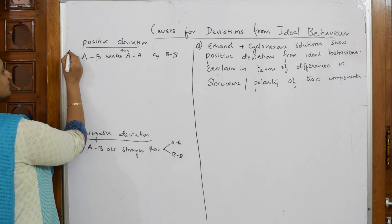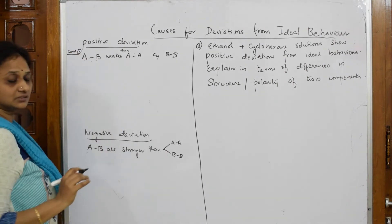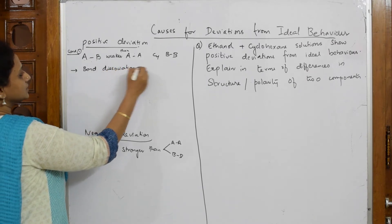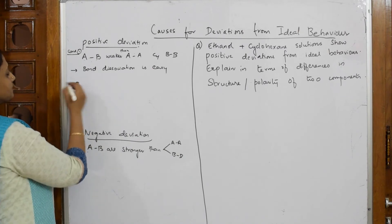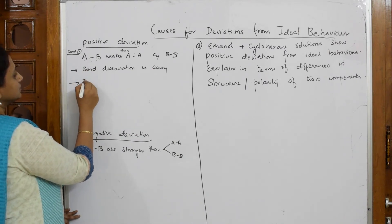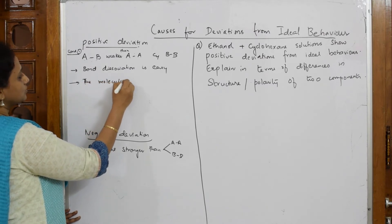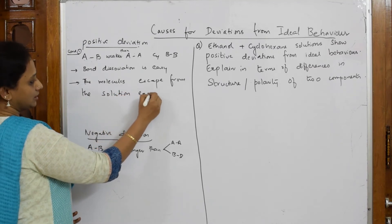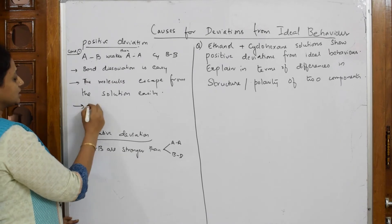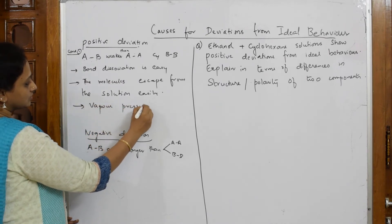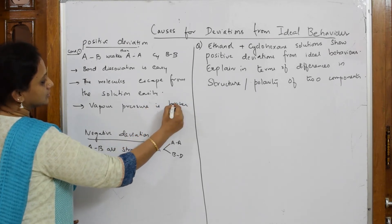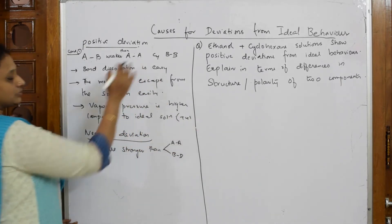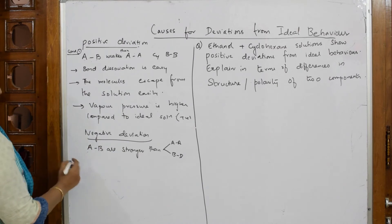So condition one for positive deviation: A-B interactions are weaker than A-A and B-B. When they are weaker, bond dissociation is easy. When it is easy, the molecules escape from the solution easily. When they escape easily, vapor pressure is higher compared to ideal solutions, hence showing positive deviation above the ideal solution curve.